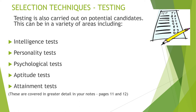Different selection testing techniques are available. Intelligence tests are like IQ tests, asking questions to test logical thinking. Personality tests are useful for team-based roles. Psychological tests ask how you would react to different situations. Aptitude tests assess how good you are at something — either practical or task-based, such as checking an insurance form. Attainment tests are similar to intelligence tests but focus on achieving a specific outcome. These are covered in greater detail on pages 11 and 12 of the HR notes.